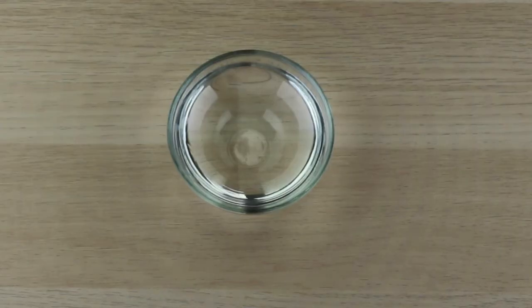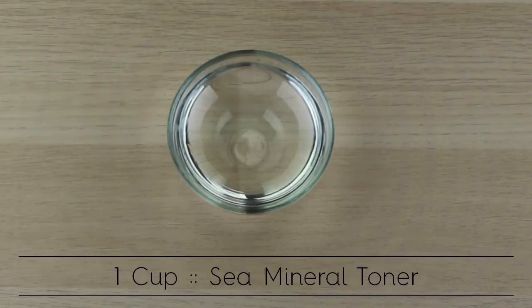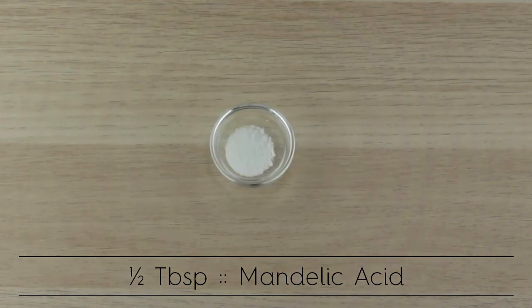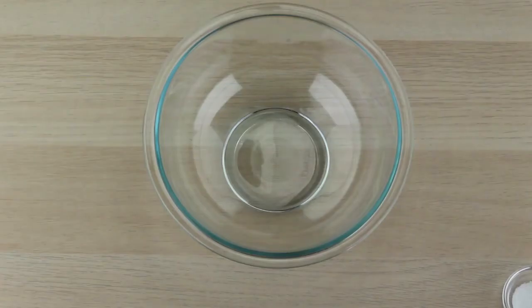To make your mandelic acid toner you need some ingredients. First you'll need one cup of sea mineral toner, two tablespoons of neem tincture, one half tablespoon of mandelic acid, and of course a bowl to mix in.